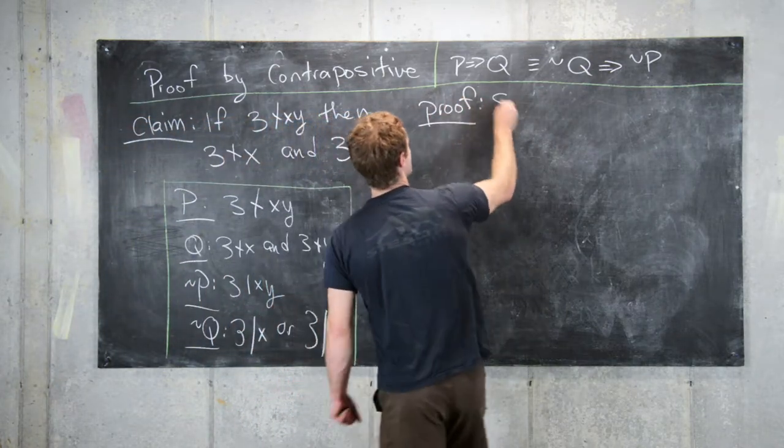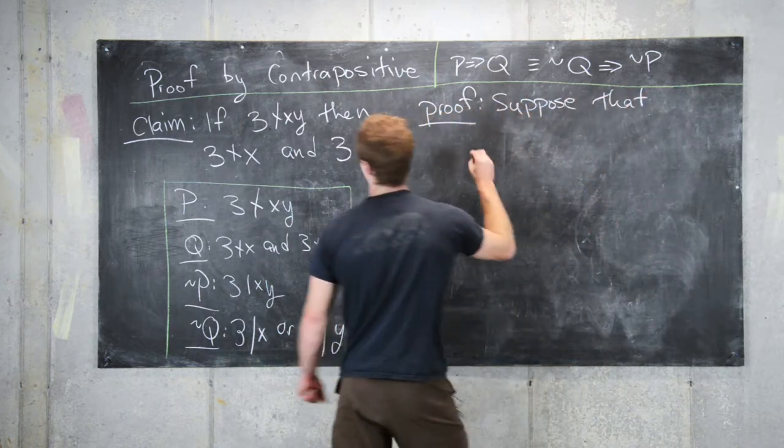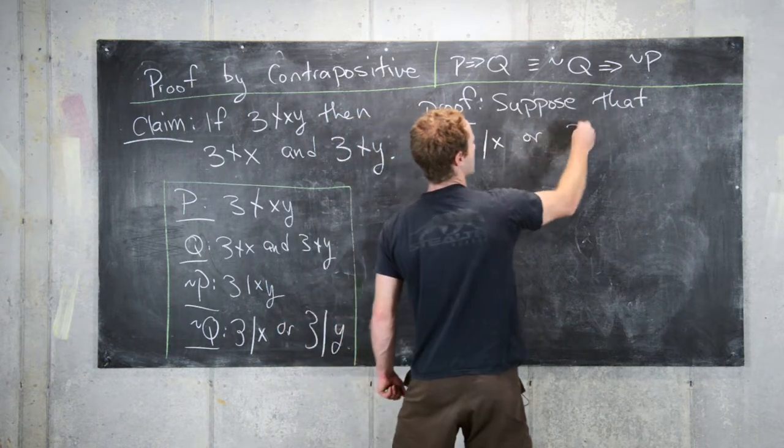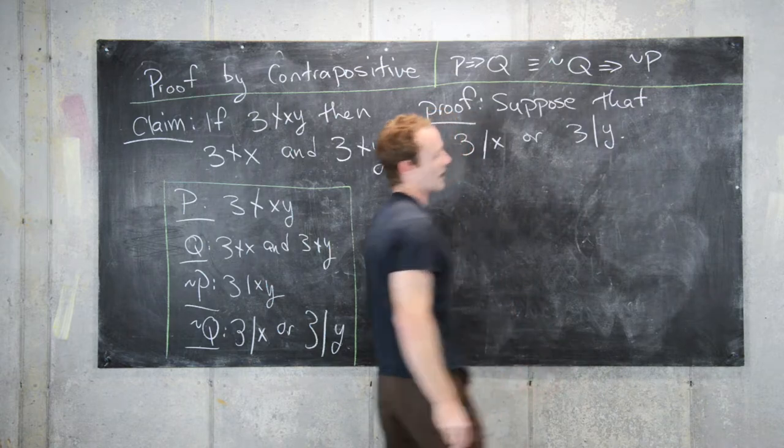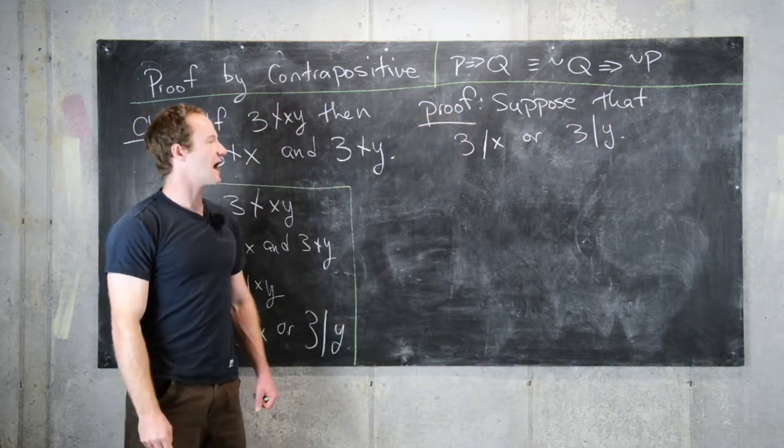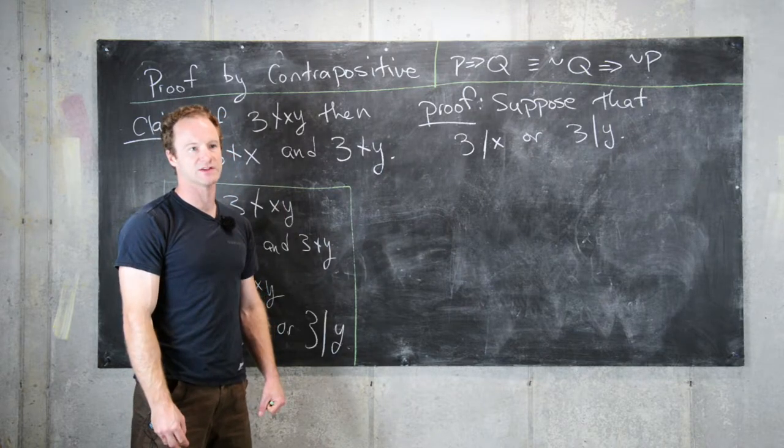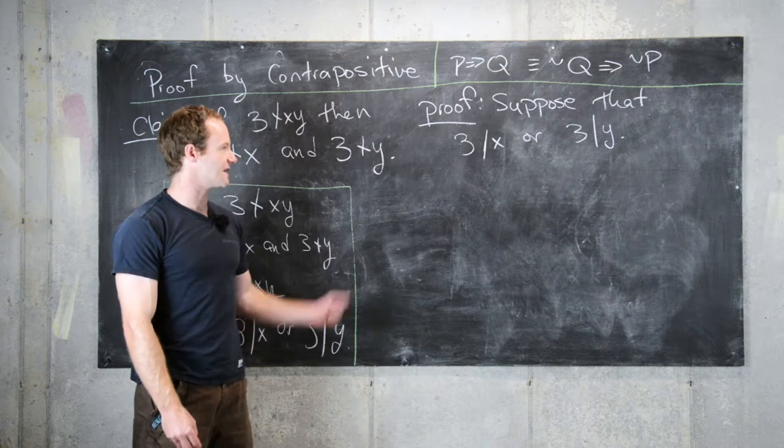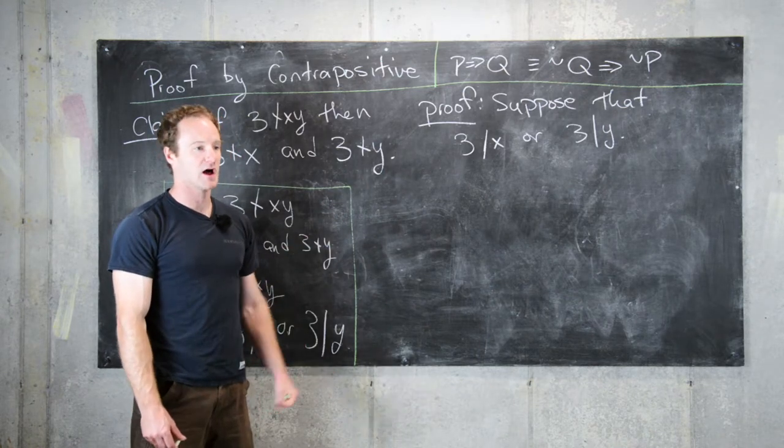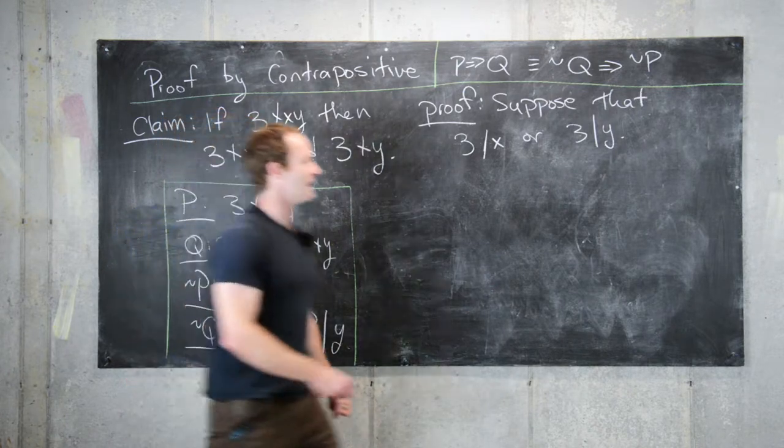Proof: Suppose that 3 divides X or 3 divides Y. You've got two choices here—you can either break this into cases, one case where 3 divides X and one case where 3 divides Y, or you can realize that there's some symmetry in this OR statement and without loss of generality assume that 3 divides X, and that's what we'll do.